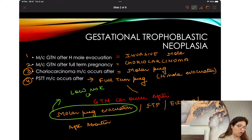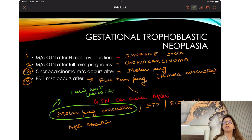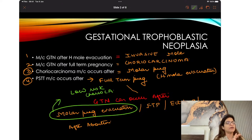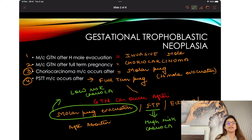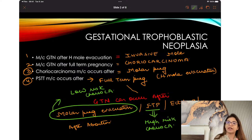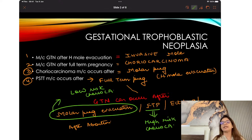That is why choreocarcinoma occurring after molar pregnancy is a low-risk choreocarcinoma. But after full-term pregnancy, we never follow up HCG levels. So if GTN occurs after full-term pregnancy, it will be detected at a very late stage. That is why choreocarcinoma occurring after full-term pregnancy is a high-risk choreocarcinoma.